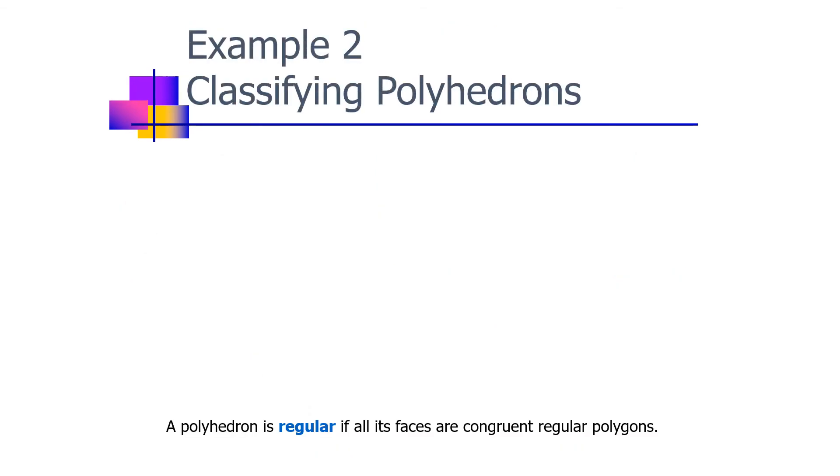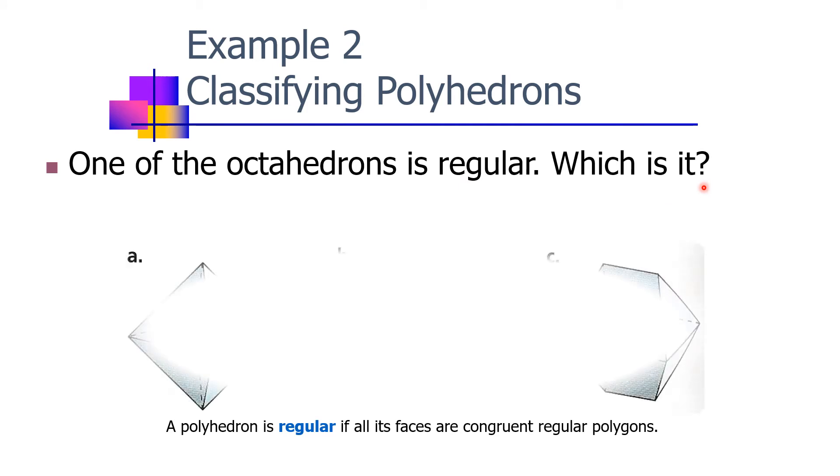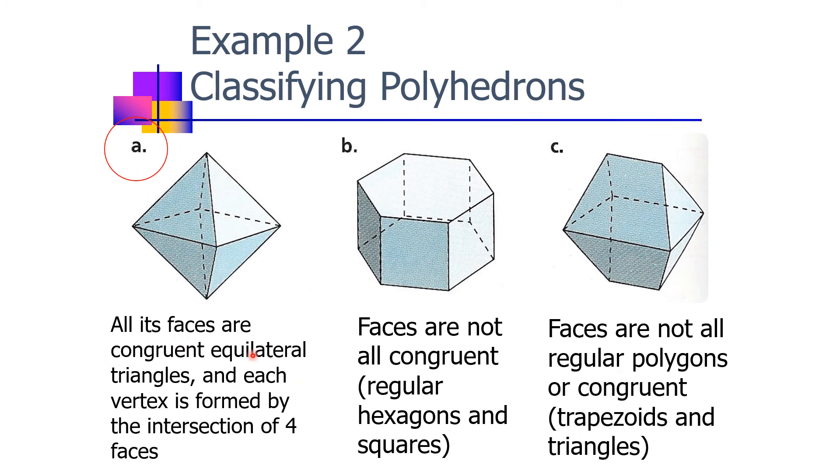Example two: classifying polyhedrons. One of the octahedrons is regular. Which is it? A polyhedron is regular if all its faces are congruent regular polygons. Let's see which of these are the regular octahedrons. Here, all its faces are congruent equilateral triangles, and its vertices are formed by the intersection of four faces. In letter B, faces are not congruent—regular hexagons and squares. And the faces are not all regular polygons or congruent. These are trapezoids and triangles. So the answer is letter A, because all of its faces have the same size.